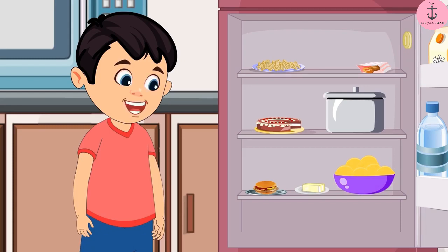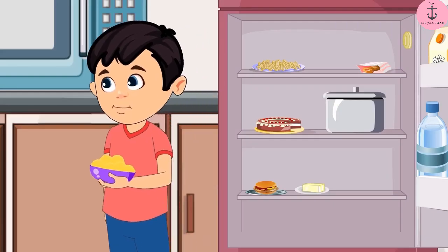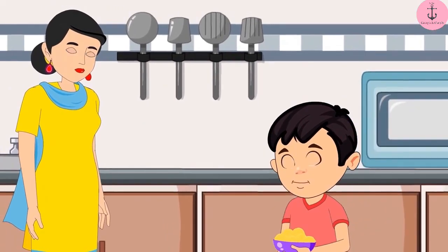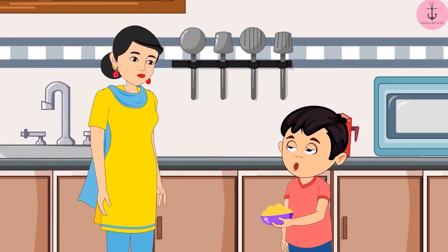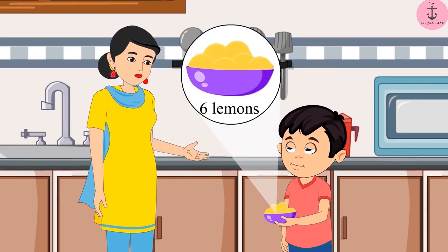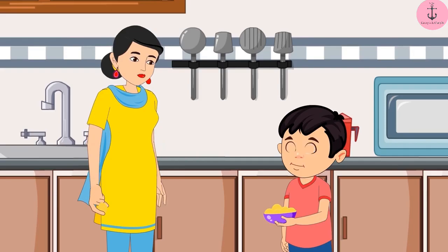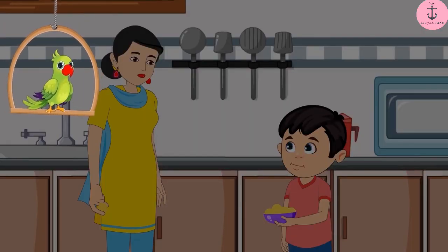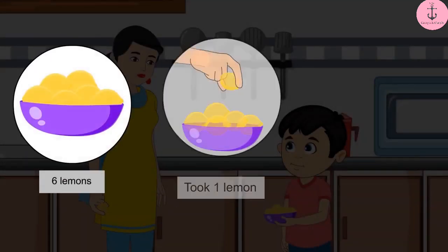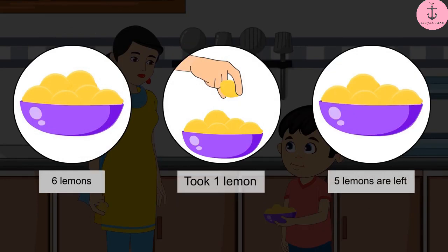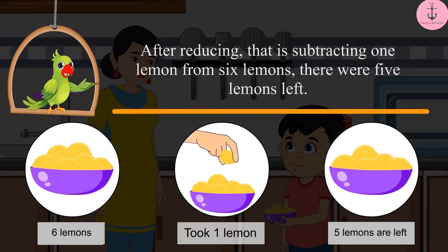No problem, I will take all the lemons. Then Chotu takes all the lemons and goes back to his mother. Take this, Mommy. How many lemons do you need to make one glass of lemonade? Oh, Chotu, you got six lemons. I just need one lemon. Thank you. Now please keep the remaining lemons back in the fridge. So, children, can you tell me how many lemons Chotu kept back in the fridge? If out of six lemons, Chotu's mother took one, so now there are five lemons left. Did you see how after subtracting one lemon from six lemons, there were five lemons left?